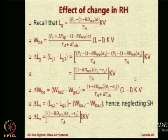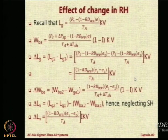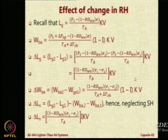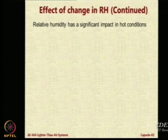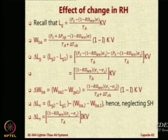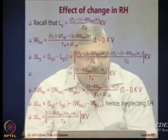Therefore, the net lift change will be the difference between the gross lift change and the weight of the ballonet air. Suppose we neglect superheat just to make the expression simpler — if you do not neglect it you will have a much bigger expression, because then you cannot take anything common. But if superheat is neglected, then Ta can be taken common and you will get it as E1 minus E2. So, what we see is that the effect of humidity change — going from E1 to E2 — is going to create a change in the net lift.